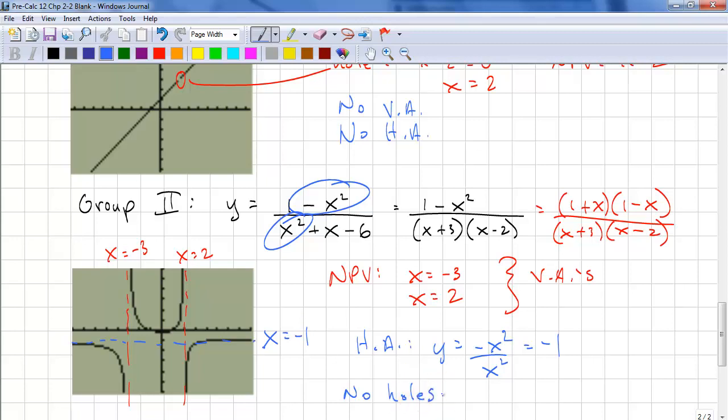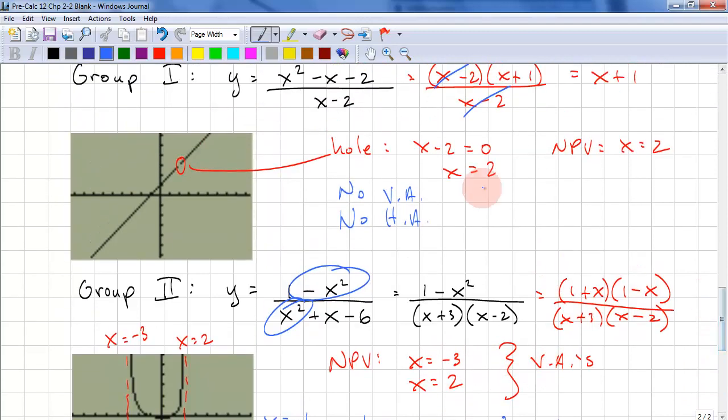We have no holes in this one. Look for the pattern of why we don't have holes, why we have vertical asymptotes compared to this one where we have vertical asymptotes, no vertical asymptotes, and a hole.